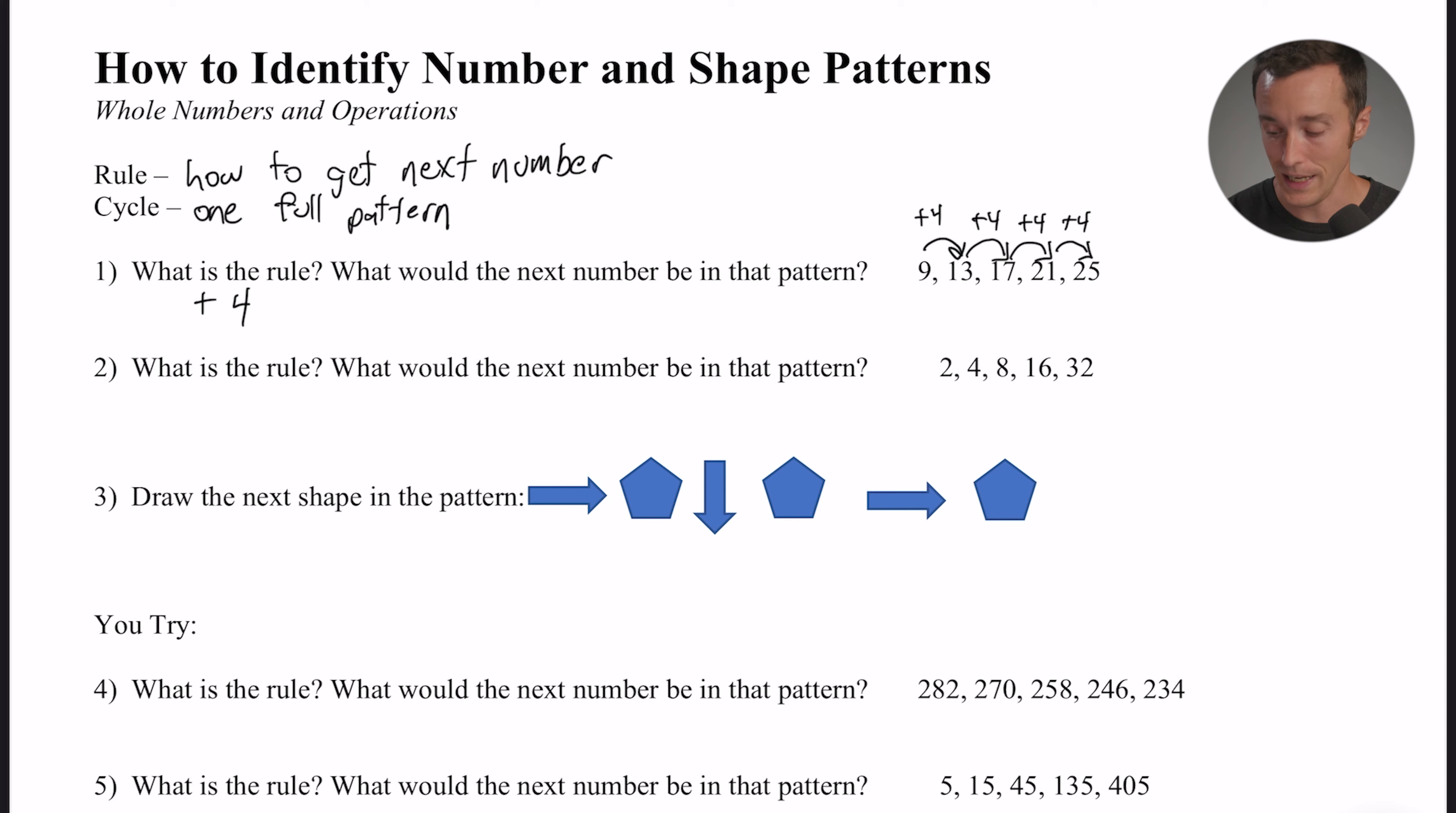So the second part of that question is what would the next number be in that pattern? So to do that, launch from that 25 and think, what would happen if I added four more? That would give me a 29. So the next number in the pattern is a 29.